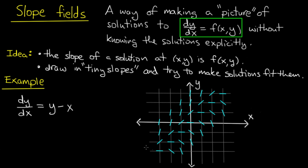Now another way to do this is to fix a value of y minus x. So for instance, I could fix y minus x equals 0. That's the line y equals x. And everywhere along that line in this plane, I need to draw a little tiny line of slope 0, because y minus x is 0 on that line.